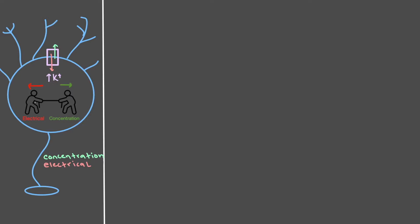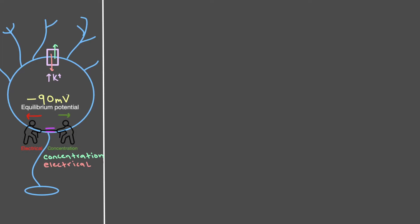So what should potassium do — listen to the concentration gradient or the electrical gradient? How does it decide whether to leave or enter, and how does it know when to stop? It turns out that minus 90 is special because at that value the electrical gradient and the concentration gradient are equal but in opposite directions. It's like someone pulling your right arm to the right and your left arm to the left — you just stop. At minus 90, the equilibrium potential, the two gradients become equal and opposite, so potassium just stops entering and exiting the cell.